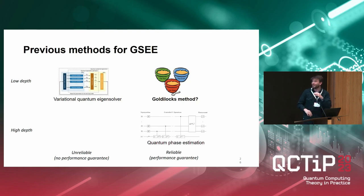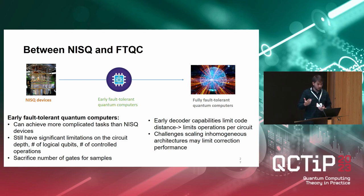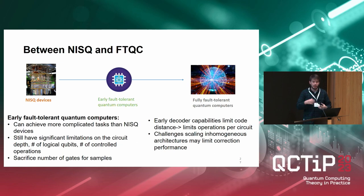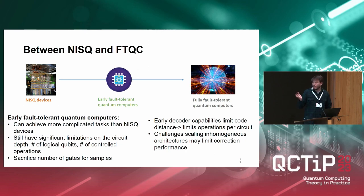You want to be in that sweet spot where you can tune the depth and still get reliable estimates. This is motivated by the early fault tolerance framework: we want to be in a regime where we have a fault-tolerant quantum computer, but the number of operations is still limited and we cannot afford many auxiliary qubits.